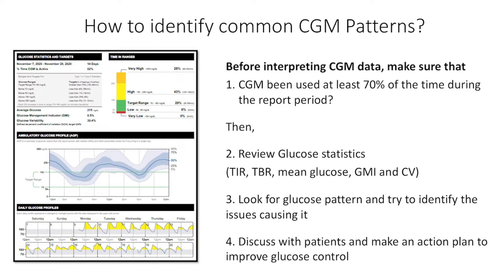Then review the glucose statistics on the left upper panel of the AGP report — for example, the mean glucose, the GMI (glucose management indicator), and the time in various target ranges, such as time in range, time above range, and time below range, which are shown on the right upper panel of the AGP. Then look at the glucose pattern in the middle part of the AGP. It is the best way to visualize glucose data 24 by 7 and identify issues with the glucose data.